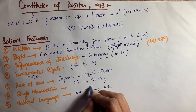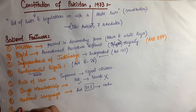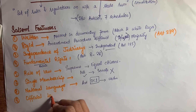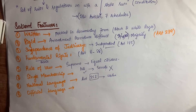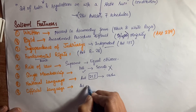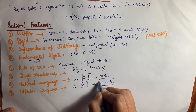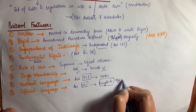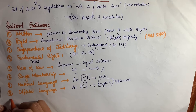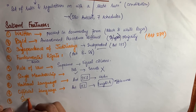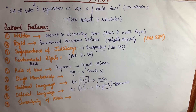The next feature is national language. According to Article 251 of the Constitution, Urdu is the national language of Pakistan. The next is official language — according to Article 251, English is the official language of Pakistan, used for official work.